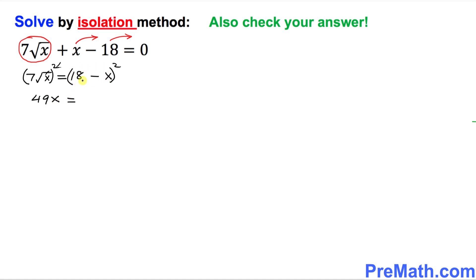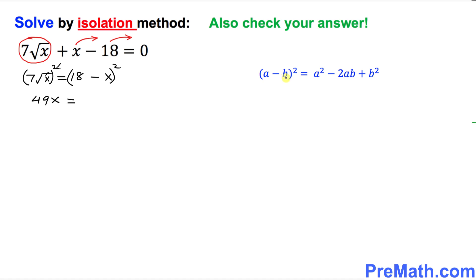Now you can take care of this thing, 18 minus x square, you can take care of using this well-known formula. This is a minus b square equal to a square minus 2ab plus b square. That's one way. Here you can say 18 is your a and x is your b. You can do one way. And let me show you another way that you can do. That's also perfectly all right.